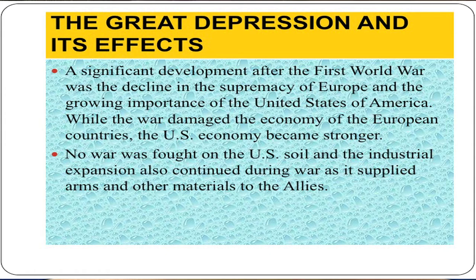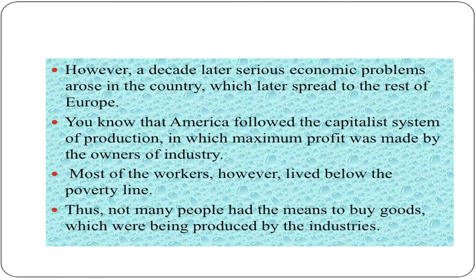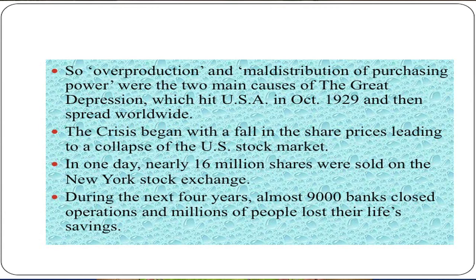The year 1929 saw one of the greatest depressions the world ever faced. A significant development after the First World War was the decline in the supremacy of Europe and the growing importance of the United States. While the war damaged the economy of European countries, the United States economy became stronger — no war was fought on US soil, and industrial expansion continued during the war as it supplied arms and munitions to the Allies. However, a decade later, serious economic problems arose in the country, which later spread to the rest of Europe. America followed the capitalist system of production, in which maximum profit was made by the owners of industry, while most workers lived below the poverty line. Thus, overproduction and maldistribution of purchasing power were the two main causes of the Great Depression, which hit the USA in October 1929 and then spread worldwide.